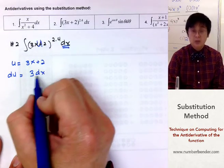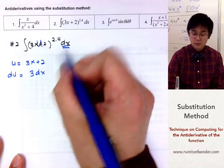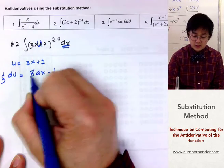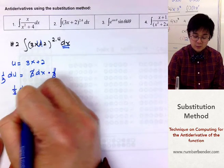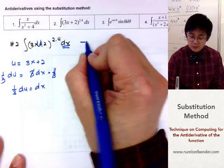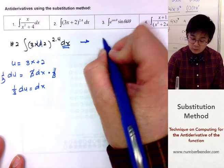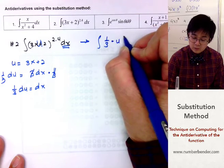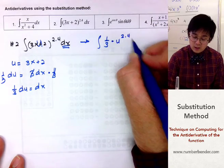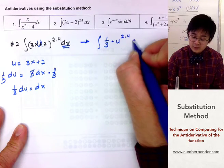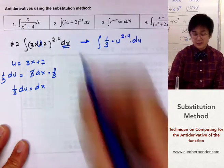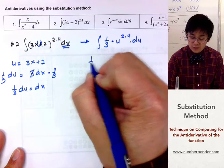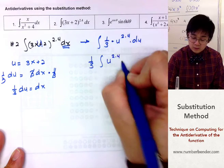All we need to do is get rid of the constant 3 so that we have just dx in our integral. Multiplying both sides by one third, we get one third du equals dx. Modifying the integral function, it becomes the integral of one third times u to the 2.4 du. Using the constant rule, one third goes outside and we have the integral of u to the 2.4 du.